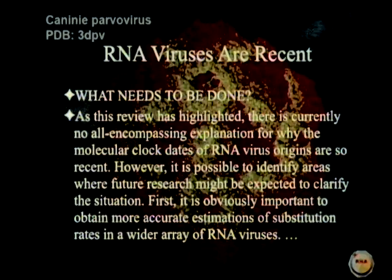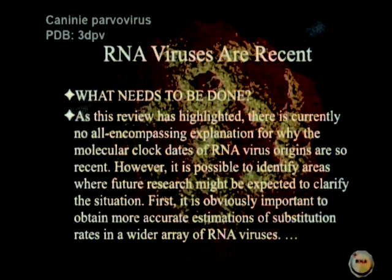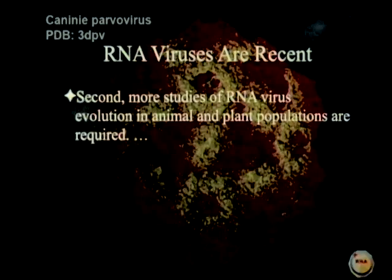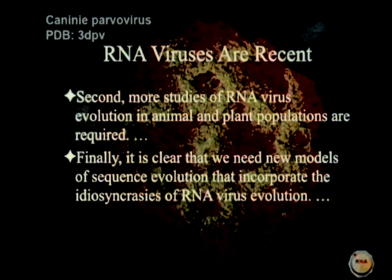Holmes doesn't have a really good answer. There is currently no all-encompassing explanation for why the molecular clock dates of RNA viruses are so recent given that viruses must have been very old since they diverged from each other — that's the problem. He identifies areas for future research: obtaining more accurate estimations of substitution rates in a wider variety of RNA viruses, more studies of RNA virus evolution in animal and plant populations, and new models of sequence evolution that incorporate the idiosyncrasies of RNA virus evolution. Maybe the gamma distribution isn't good enough.